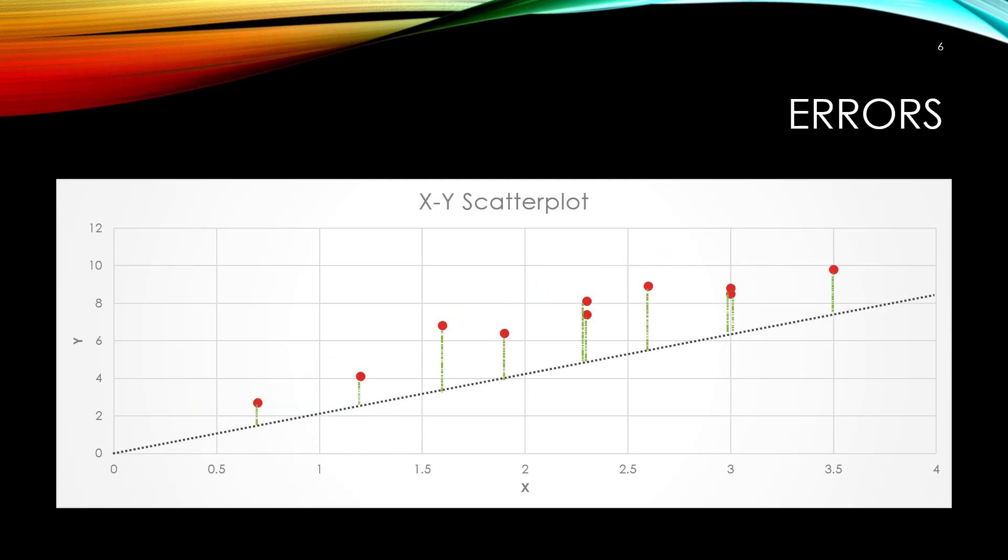Beyond visual inspection or qualitative assessment, how do we quantify the error of the line or model? We have our scatter plot here again with the black dotted line. From every data point, we can draw a vertical line to the black dotted line as shown by the mini green lines. The length of these green lines are the errors associated with the model. If we use this model to predict Y values from new X values, the model is most likely to always under-predict.